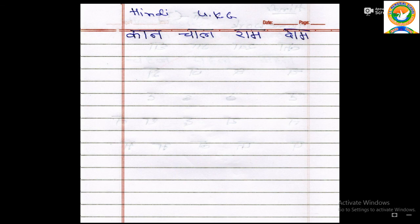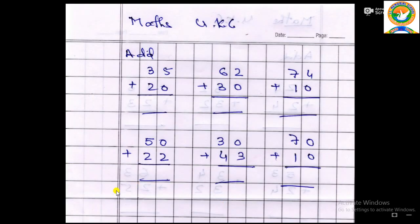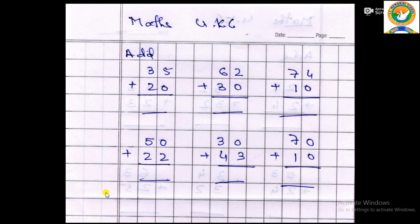Alright, aage bhi dekhte hain. Doosra subject ka homework aaj dekhte hain — Maths ka. Maths mein phir add karna hai. Sun, add kya karna hai: 35 plus 20, 62 plus 30, 74 plus 10, 50 plus 22, 30, 43, aur 70 plus 10. Alright, zero se confuse nahi karoge. Copy karke likh lo, uske baad WhatsApp par bhejo. Bologe Mammi Papa ko.